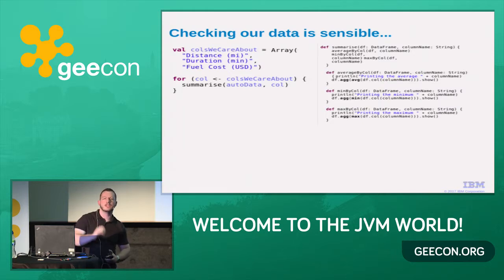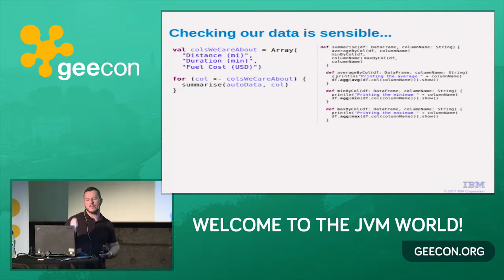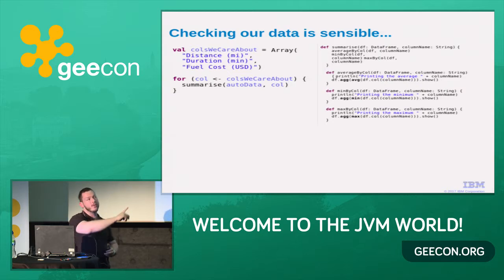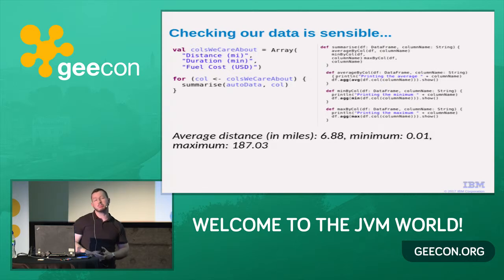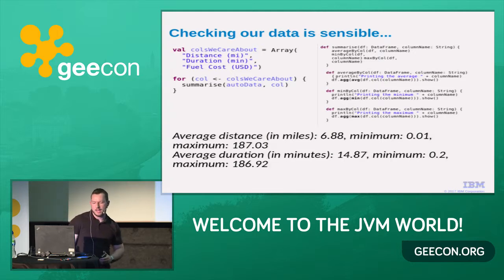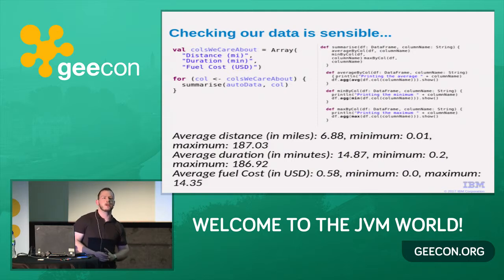Is it actually sensible data? Before we do any machine learning, is it junk? I'm going to do some Scala functions on the right — I've got a summarize function. You give me a data frame and a column name, and I'll give you the minimum, maximum, and average. Then I call this for each column I care about: distance, duration, and fuel cost. Average distance in miles is 6.8 — okay. Maximum is 187 — making sense. Duration is still okay. Fuel cost is very cheap in the US. So our data is good, sensible, passes all our tests.